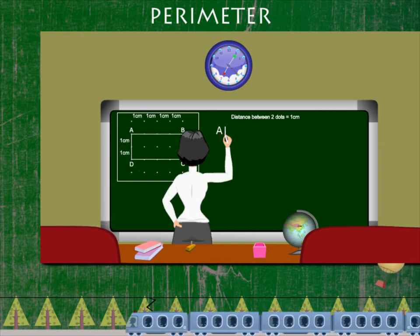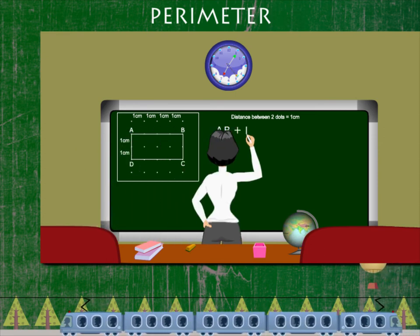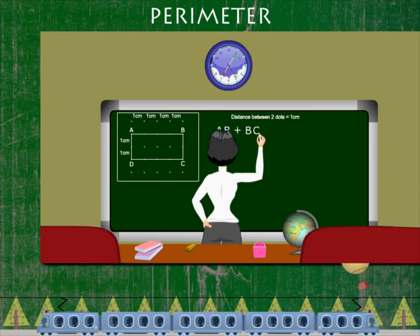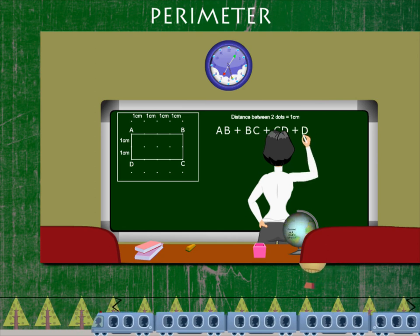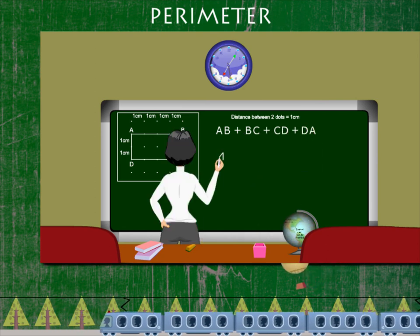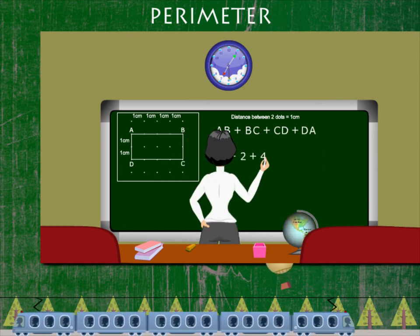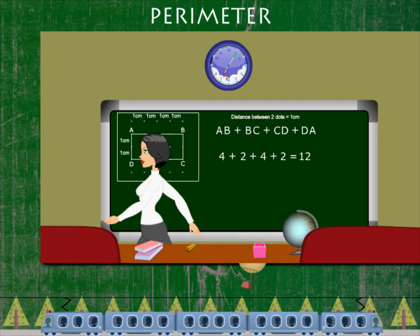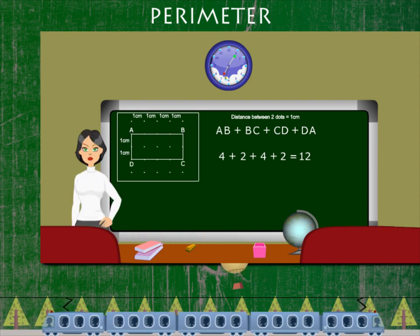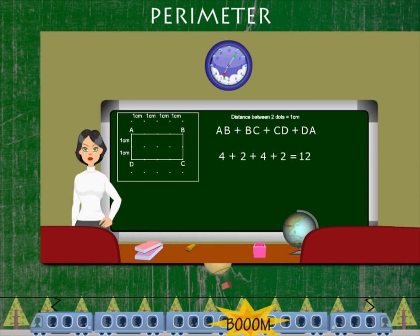So perimeter is AB plus BC plus CD plus DA, which equals 12 units.